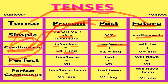In future continuous tense, we use 'will be' plus the ing form of the verb. With I and we, grammatically 'shall be' is the correct form. Like: 'I shall be going to school tomorrow.' But when I am determined or certain, I use 'I will be going to school tomorrow.'